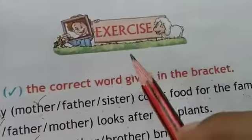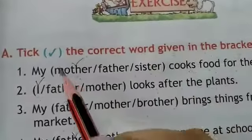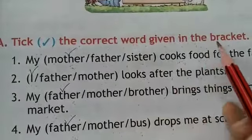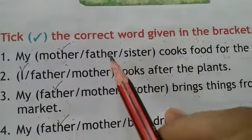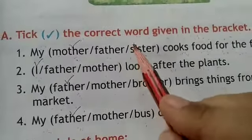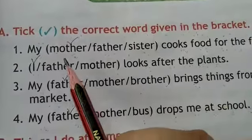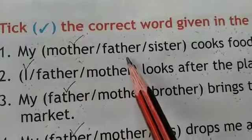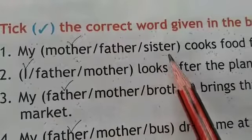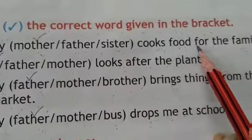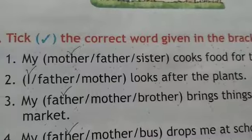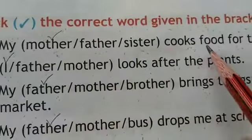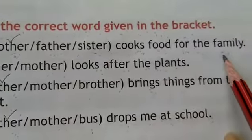This is the book exercise. Firstly read the heading: Tick the correct word given in the bracket. Jo correct word hain unko tick karna hai, brackets mein diye gaye hain. First options are mother, father, oblique sister — cooks food for the family. My mother cooks food for the family.